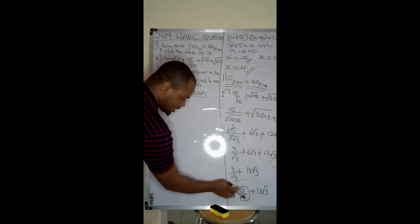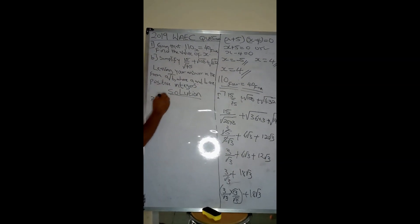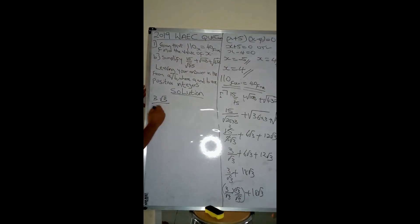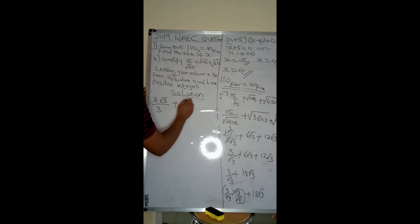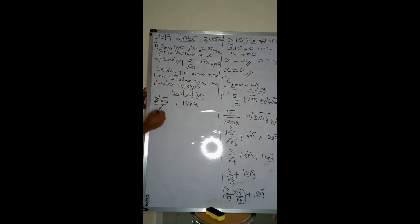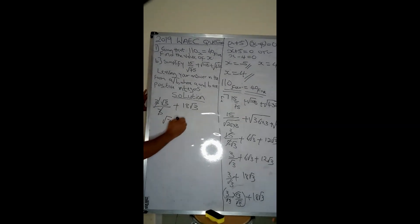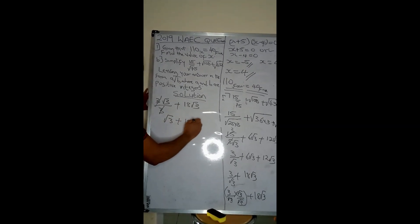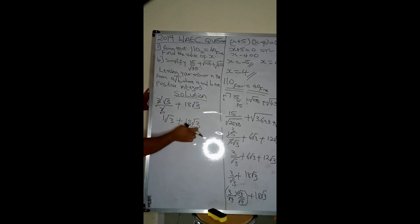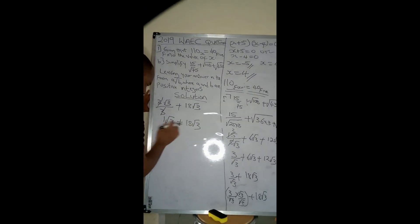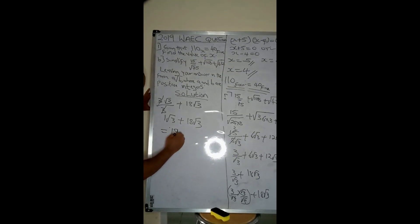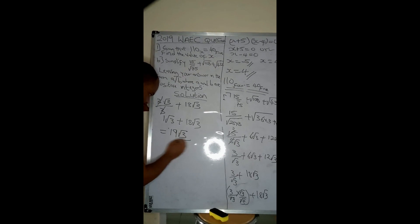Because we've simplified this, 3 times root 3 is 3 root 3 all over 3 plus 18 root 3. This is the same as 1 root 3. So 3 root 3 is common, just 1 root 3, 1 plus 18 is 19 root 3. Now we've seen how to solve that question involving number base and surds.